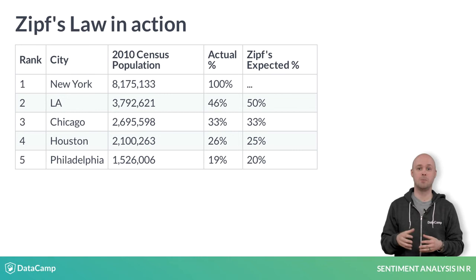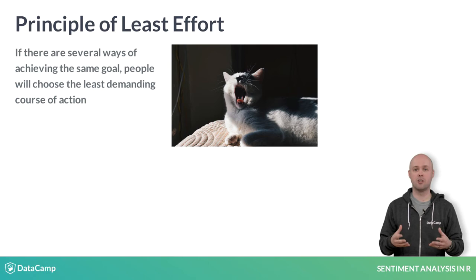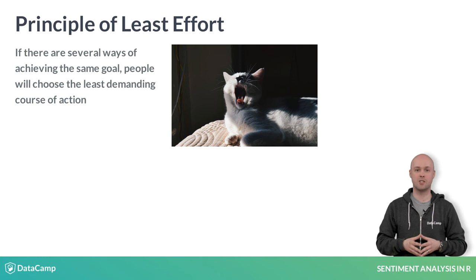Zipf's Law can be observed outside of language too. Here is a table of U.S. city populations — Zipf's Law can be observed in our language, the way we settle cities, and sometimes even in industry market shares. The other principle at play here is called the principle of least effort from Library Sciences. A speaker or writer doesn't want to exert a lot of effort when communicating, while the audience doesn't want to spend a lot of energy interpreting. So the word choice or lexical diversity becomes limited.